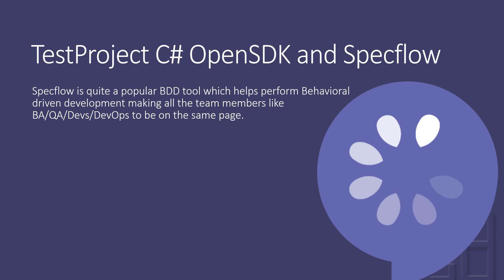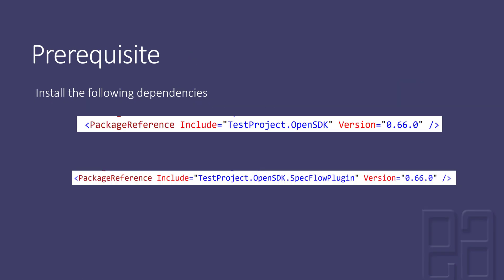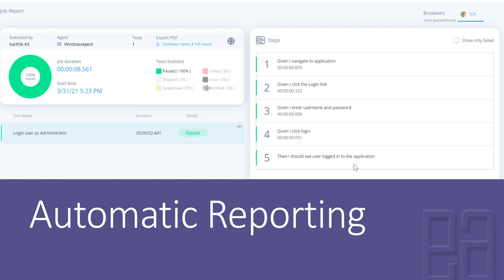The only prerequisite we have to add within our existing code, apart from the TestProject OpenSDK library, is the TestProject OpenSDK SpecFlow plugin. Once we have this plugin included in our existing test project code, this is the only extra dependency we'll be adding. Once we have this, we'll automatically start getting a beautiful report within the TestProject platform using the automatic reporting option — something like this, with steps like 'given I navigate to the application', 'given I click the login link', 'given I enter the username and password', and so on. You can also get the summary report and full report.